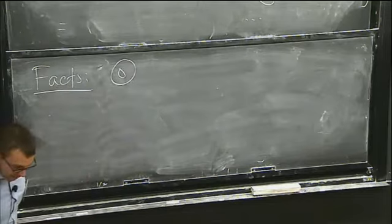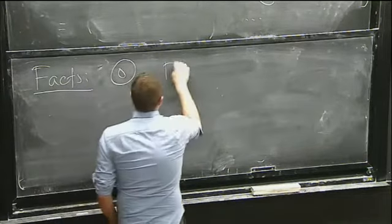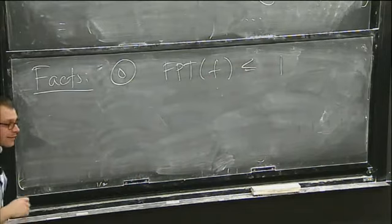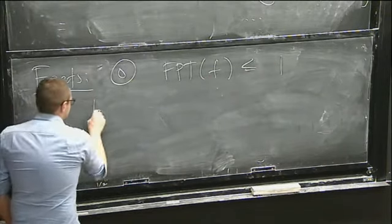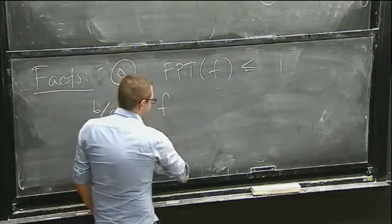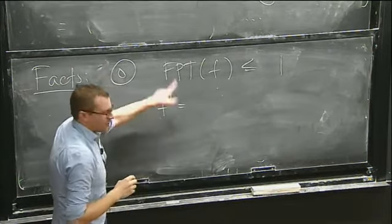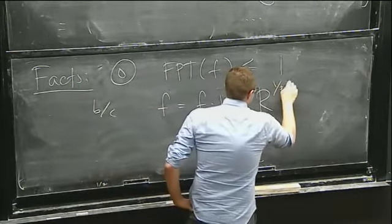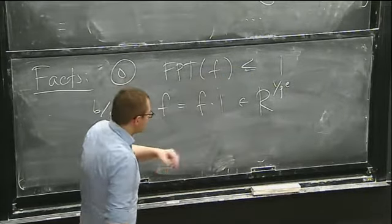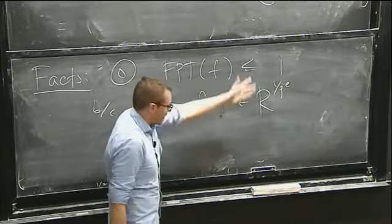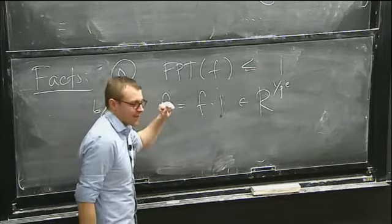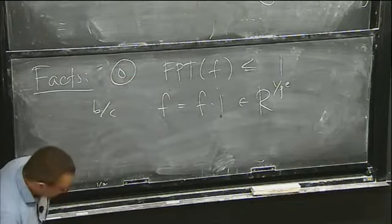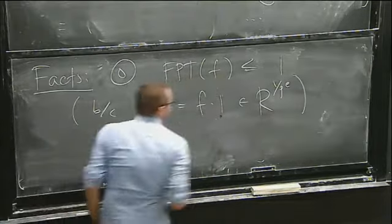First fact: the F-pure threshold is less than or equal to 1. This is easy. Why? Well, if I take f, there is no denominator already. So this is f times 1 — no matter what exponent set you choose, that's a basis element. This is the idea that it doesn't matter which power you choose; any one where the exponent makes sense gives you the same answer. So it's less than or equal to 1.